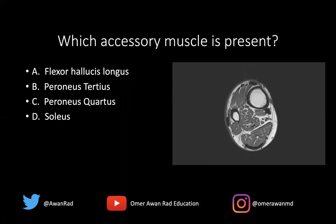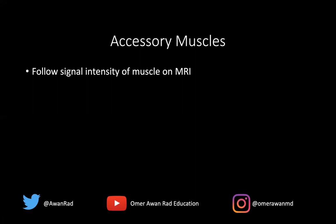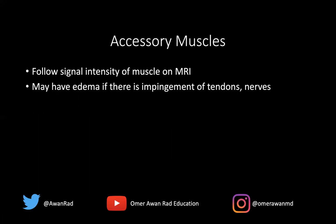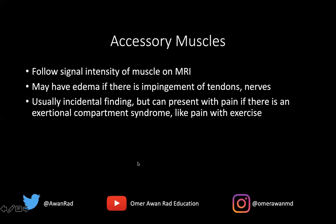We see this from time to time. There are many accessory muscles in the ankle, so I want you all to be aware of that. Accessory muscles follow the signal intensity of muscle on MRI — they look just like any other normal muscle. They may have edema though; sometimes on T2 there'll be T2 hyperintense bright signal, particularly if there's impingement. If a specific nerve or tendon is being impinged, that can result in edema and also exertional compartment syndrome. With patients who have pain with exercise, it's a confined space and can result in a functional exertional compartment syndrome, which is why accessory muscles can be clinically significant.